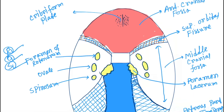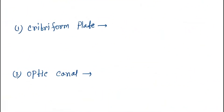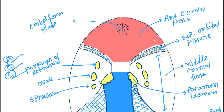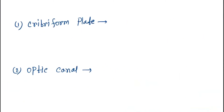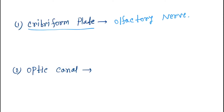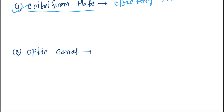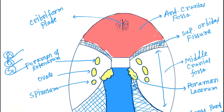Now let's see every structure passing through the foramina. First, we will start with the cribriform plate. The structure passing through the cribriform plate is the olfactory nerve, because it is connected with the nose.